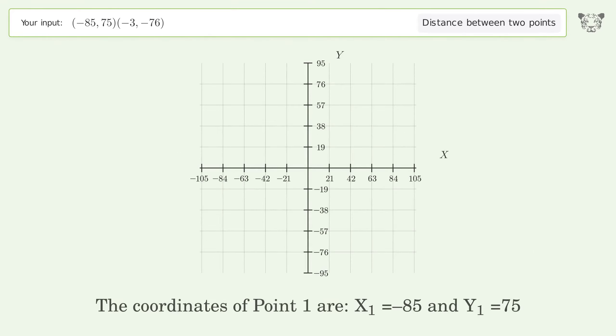The coordinates of point 1 are x₁ = -85 and y₁ = 75. The coordinates of point 2 are x₂ = -3 and y₂ = -76. d is the distance between the two points.